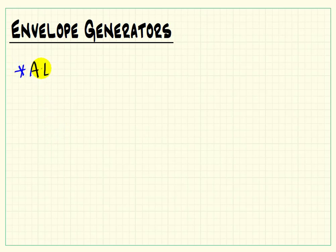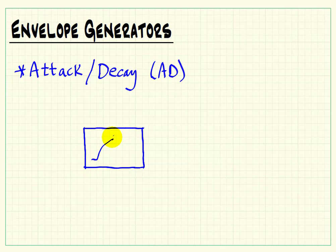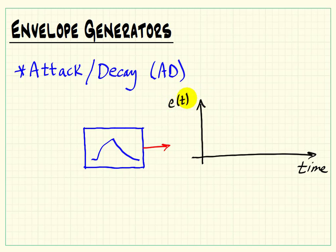Envelope generators are another critical component for modular synthesis. I'll talk about two styles, beginning with a simpler version first. This is called the attack-decay envelope generator, and it produces two elements to its envelope: the attack phase, which is the increasing portion of the waveform, and then the decay phase where it decays back to zero. The purpose of the envelope generator is to produce a control voltage, which can be used by a voltage-controlled amplifier, a voltage-controlled filter, or some other processing component.